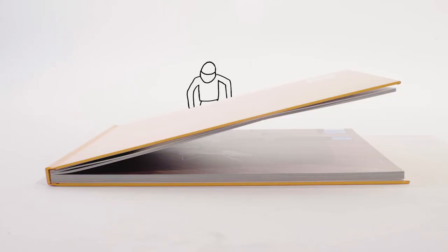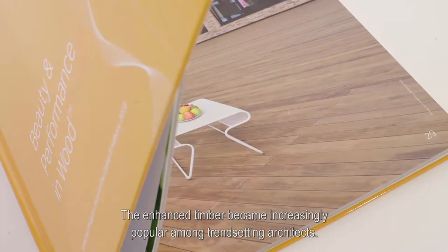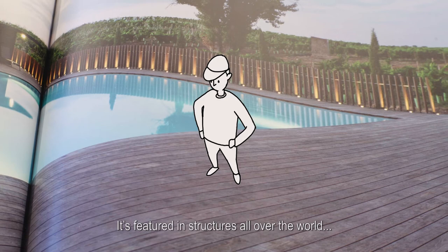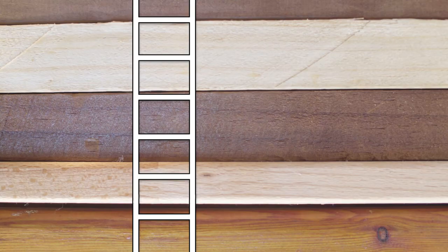In 2009, commercial production began in a factory in Norway. The enhanced timber became increasingly popular among trendsetting architects. It's featured in structures all over the world, including an iconic pavilion constructed for the 2012 London Olympics.